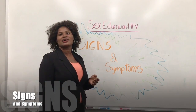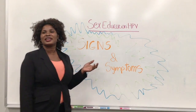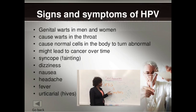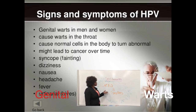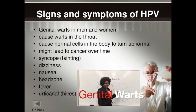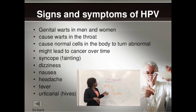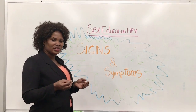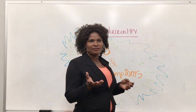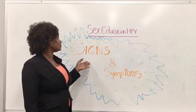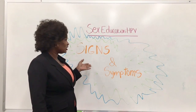One may ask: how will I know that I have HPV? I want to take some time to talk about the signs and symptoms of the virus. We have genital warts, which have a cauliflower-like appearance in your genital area. If you see these warts growing, don't take it for granted. Have yourself checked out, go see your doctor, talk to your mom about it — just seek some help.